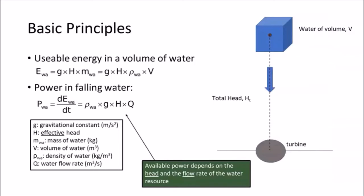You can think of a hydroturbine operating based on the potential energy of the water at its intake. A volume of water at elevation has potential energy as a function of the distance between the turbine and that water, the density of the water, the volume, and the gravitational constant. The actual measured distance between the turbine and the elevated volume of water is called the total head. The energy available to the turbine is based on the effective head — the total head reduced by losses expected in the penstock. As that volume of water moves down the penstock, the power available is related to the density, gravity, head, and flow rate. It's head and flow rate that really dictate the available power.